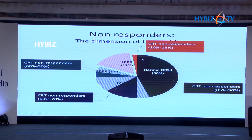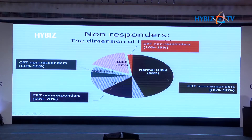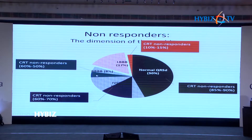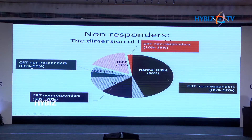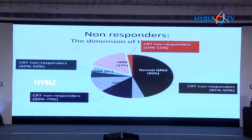On the other hand, if you have a left bundle branch morphology, close to about 85 percent of them will be responders with only 17 percent being non-responders. If you take patients with a right bundle branch morphology, about 50 to 60 percent will be responders and 40 percent non-responders. In IVCD, you will have about 30 percent responders.